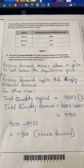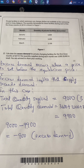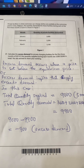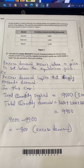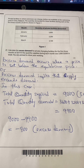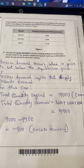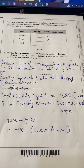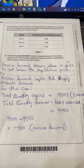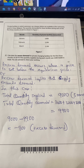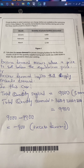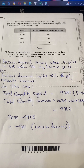Question F involves a private facility for swimmers where we need to calculate the excess demand. Excess demand occurs when the price is set below the equilibrium price, meaning quantity demanded exceeds quantity supplied. The total quantity supplied is 9,000 based on 3,000 each month — 3,000 multiplied by 3 equals 9,000. The total quantity demanded is 3,600, 3,200, and 3,100, totalling 9,900. Since demand of 9,900 exceeds supply of 9,000, we have excess demand of 900.